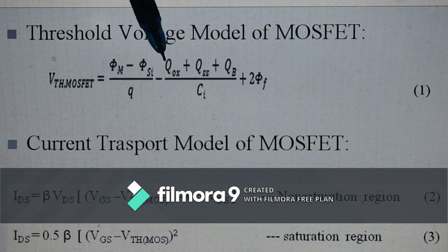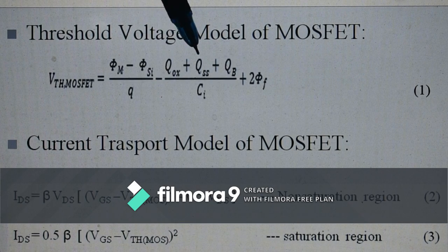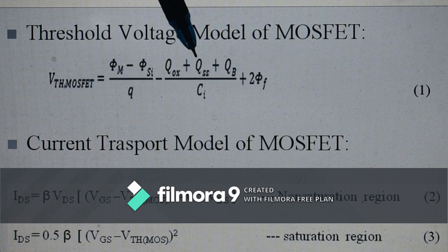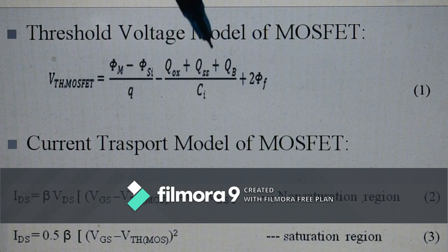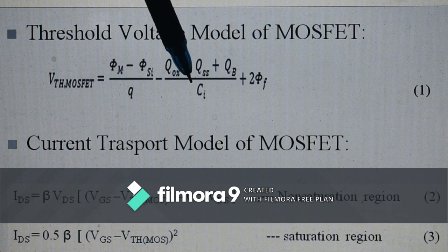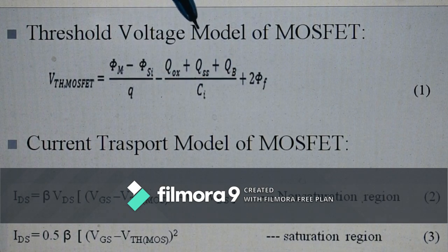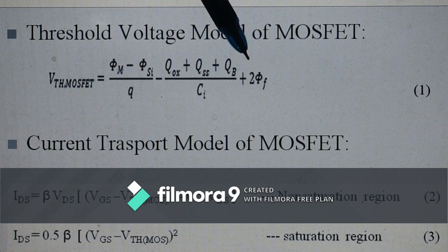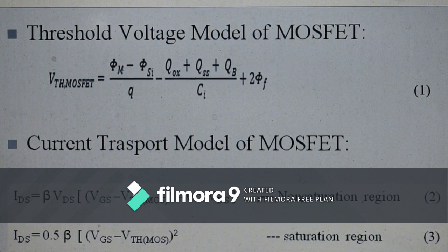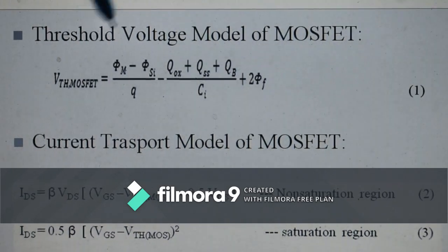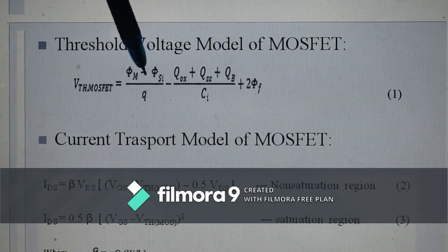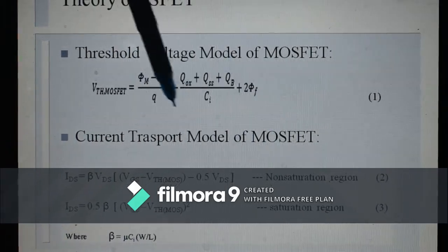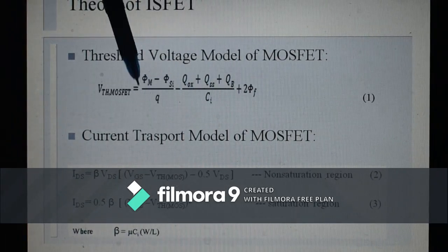QOX is the fixed oxide charge, QSS is the surface state charge, QB is the depletion charge. Charge divided by capacitance of the insulating layer gives a voltage. 2φF is the surface inversion voltage. From observation, it is clear that all terms are purely physical in nature.